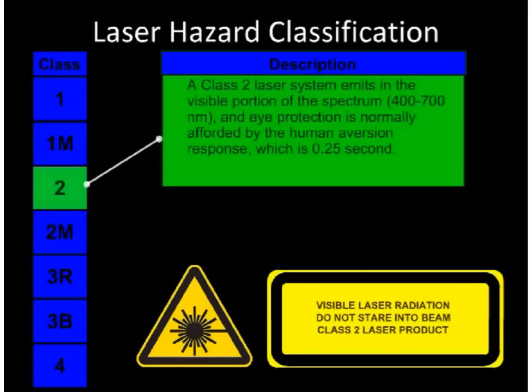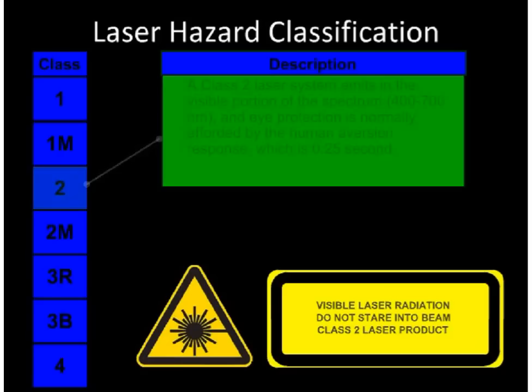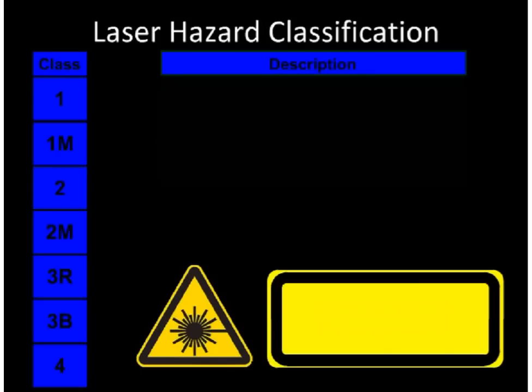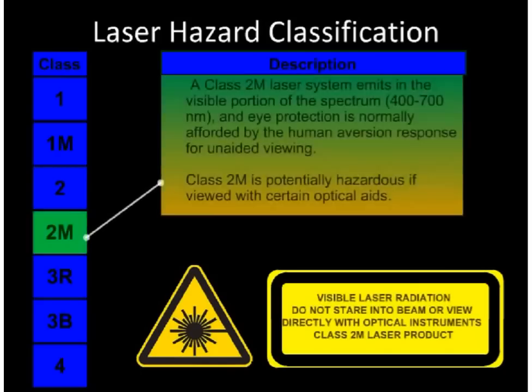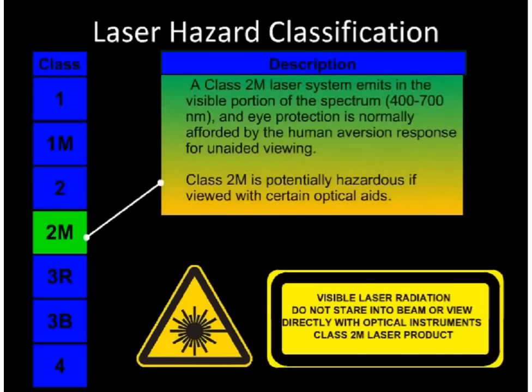Class 2 emits visible light only and is not hazardous for accidental or momentary eye exposure. It is not normally considered a skin hazard. Class 2M emits visible light and is not hazardous for accidental or momentary eye exposure except when viewed through specific types of magnifying optics such as hand magnifiers or telescopes.